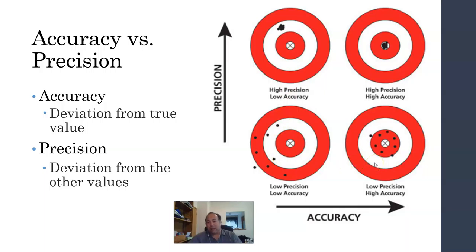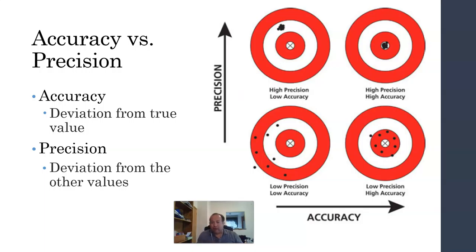The bottom left looks a lot like our random error — we've got low precision and low accuracy because we're not near the center or the true value, and our shots aren't near each other. When talking about accuracy, we're asking how close are we to our true value. When talking about precision, you need multiple measurements — it's how close our measurements are to each other that determines high precision.